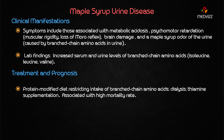Lab findings show increased serum and urine levels of branched chain amino acids — isoleucine, leucine, and valine. Regarding prognosis, maple syrup urine disease has a very high mortality rate. Treatment includes protein-modified diets restricting intake of branched chain amino acids, indicated in almost 100% of cases, and thiamine supplementation may also be helpful.